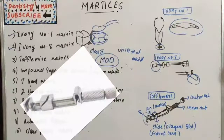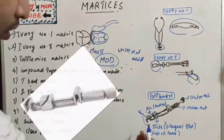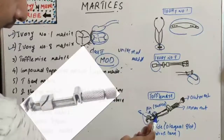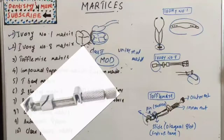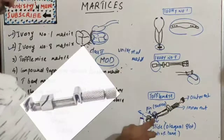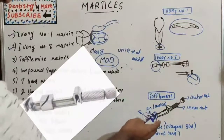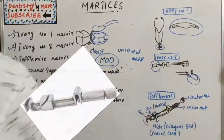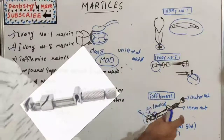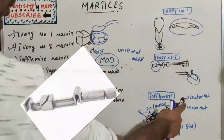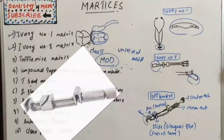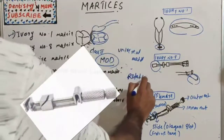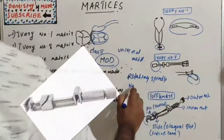There are two knurl nuts — also known as rotating spindles. One is smaller (outer knurl nut) and one is larger (inner knurl nut). The large knurl nut near the matrix band helps in adapting the loop of the matrix band against the tooth and adjusting the size of the loop.